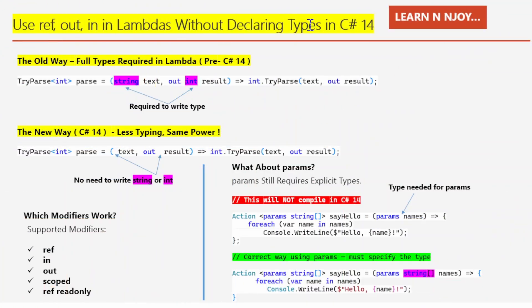Using ref, out, and in in lambdas without declaring types in C# 14. Before C# 14, if you wanted to use a lambda with a modifier like out, you had to write out the whole type. Let's understand it with the help of examples — how we used to write it the old way in lambdas before C# 14.